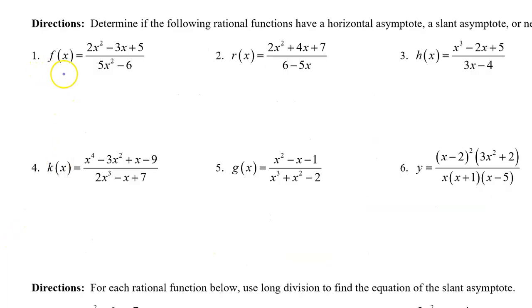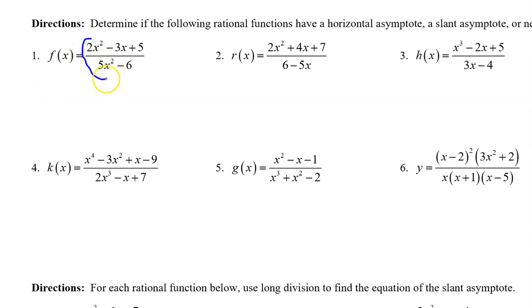Number one: the numerator has degree two, the denominator has degree two, so there is a horizontal asymptote, and it is the ratio of the leading coefficients.